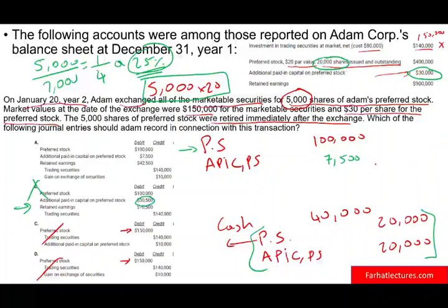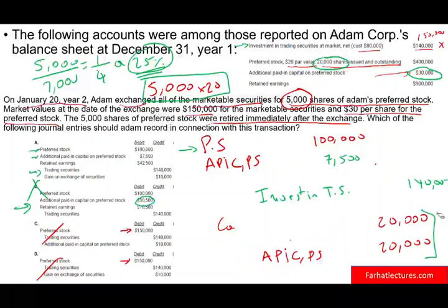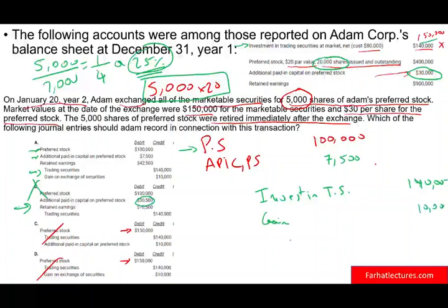For the full entry: you credit investment in trading securities $140,000 because you are exchanging and getting rid of them. Those investments had a gain of $10,000, so you recognize that gain. We retired securities worth $150,000 against $107,500, leaving a difference. We don't debit a loss — instead we debit retained earnings for the difference, which is $42,500.